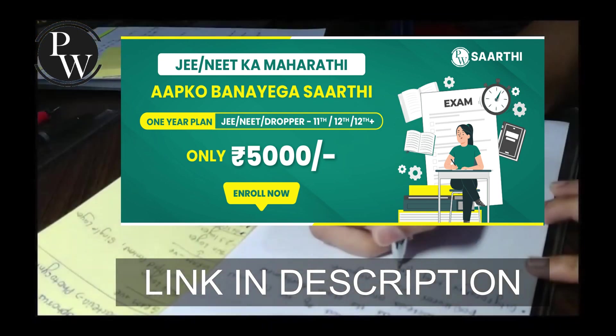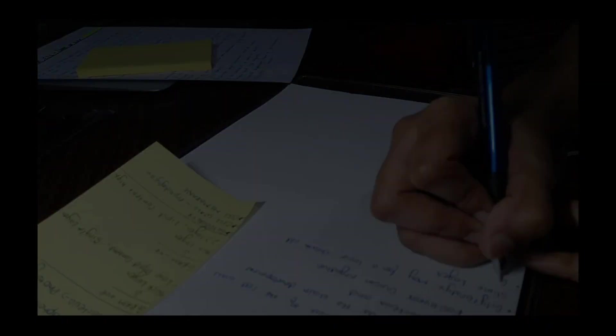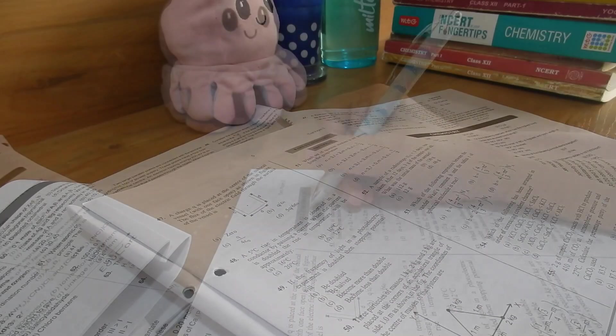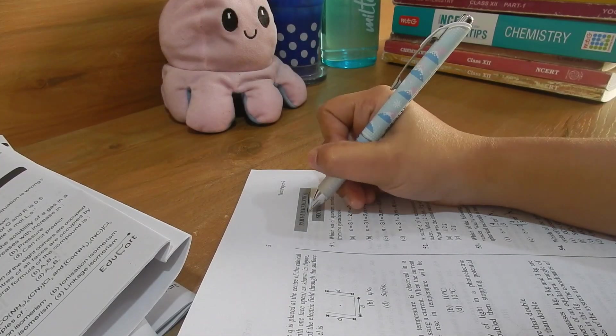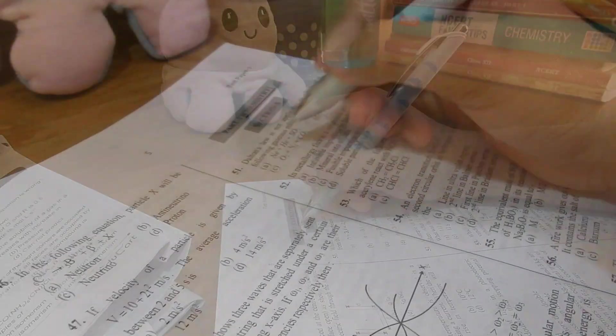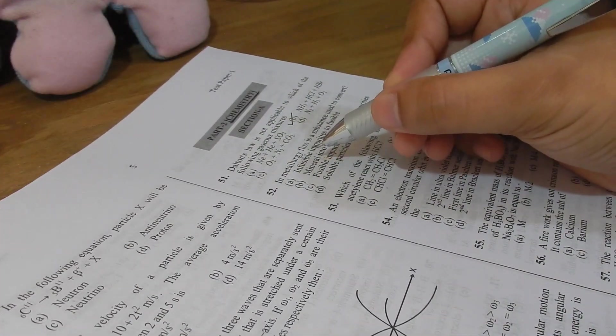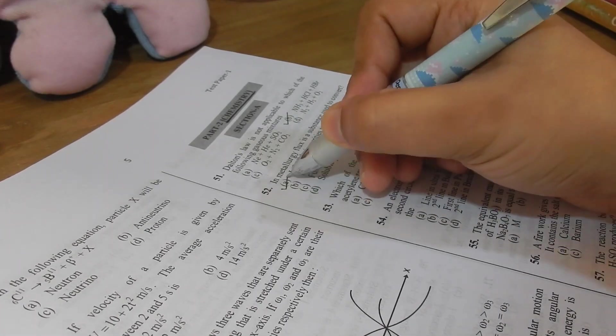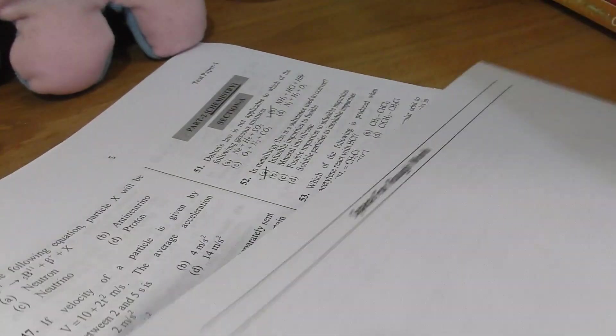Now let's get back to the video. So now you have revised all your notes probably 100 times, still your result is none. Surely you will be able to solve your questions from the class notes, but how many of them are actually from class notes in the main paper? Hardly 15 to 20 out of 45.